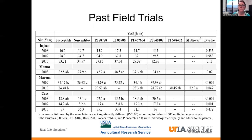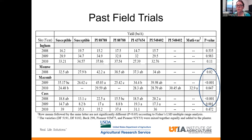I want to share with you some past field trials that I did during my master's work. This was in Michigan, but some of these sites were actually no-till. I just want to share with you what it looks like when we had nine site-year combinations. We had five of those nine site-year combinations where our resistant sources were statistically different than our susceptible sources.